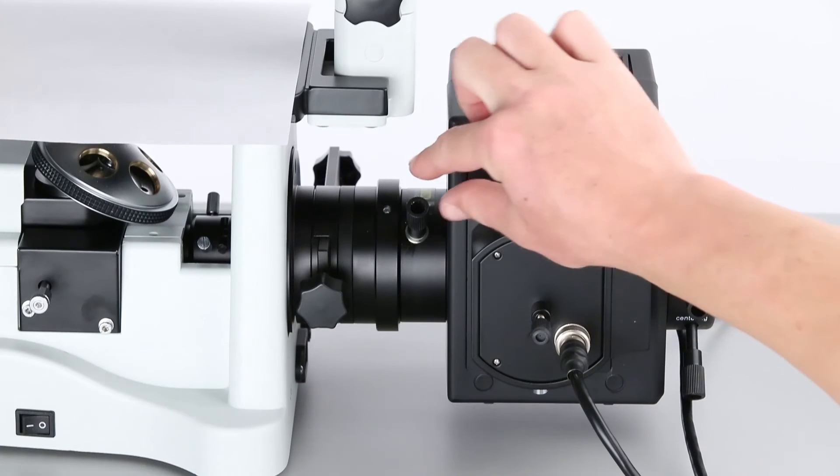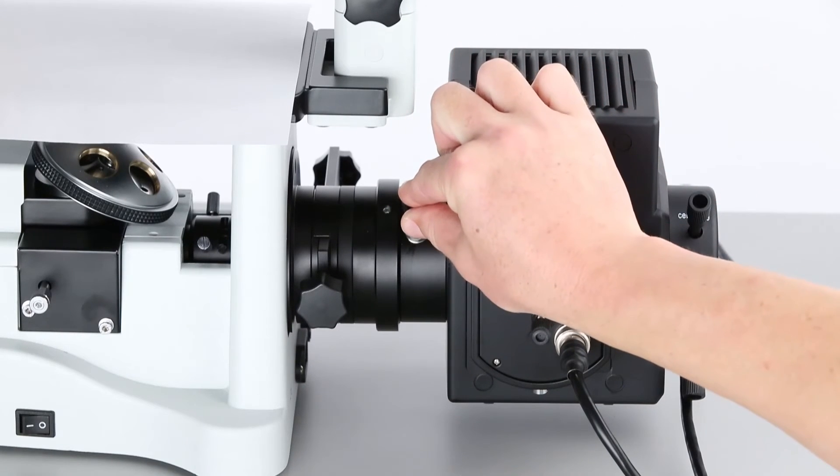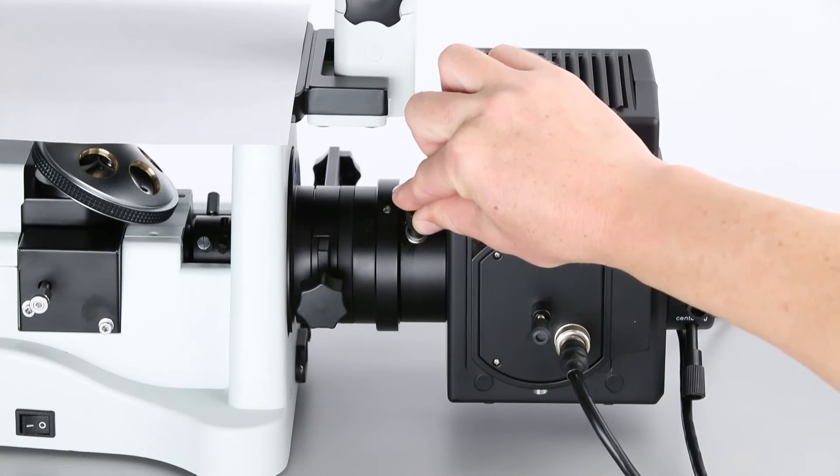We'll start by adjusting the primary focus. This control is located between the body and the lamp housing. The aim here is to make the light projections as finite as possible.